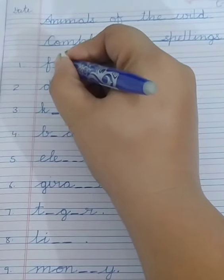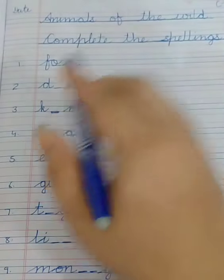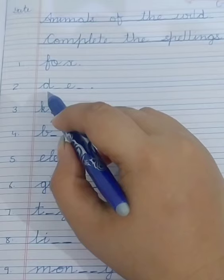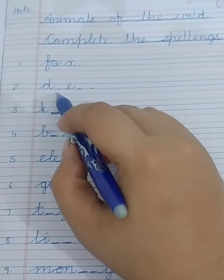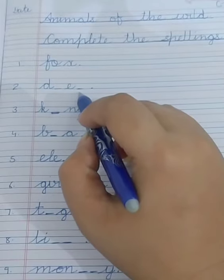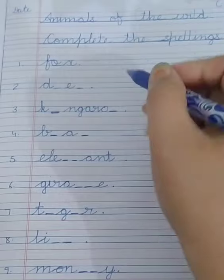Number two, the spelling is D, fill in the blank, blank E and again dash. What is it? It is a deer, D-E-E-R, deer. This is how we are going to complete the spelling.